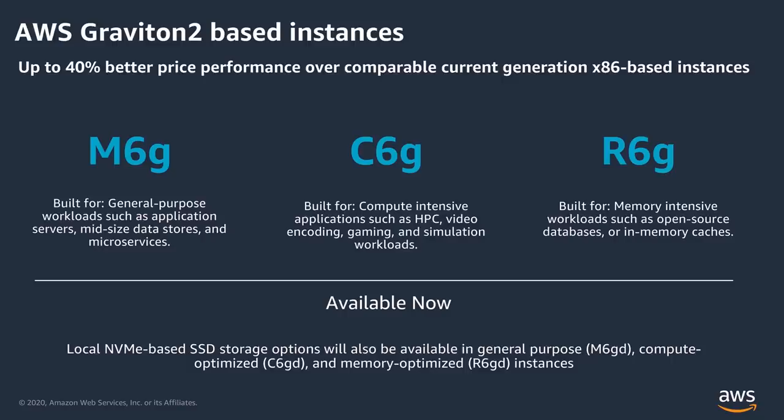The general purpose M6G, the compute optimized C6G, and the memory optimized R6G. These new instance types are now generally available and deliver up to 40% better performance at 20% lower cost, resulting in 40% better price performance over comparable current generation x86 parts.